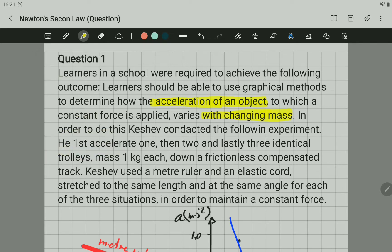In order to do this, Kichev conducted the following experiment. He first accelerated one, then two, and lastly three identical trolleys, mass 1 kg each. So you can see that the learner changes the mass. The learner was increasing the mass as he repeated the experiment.